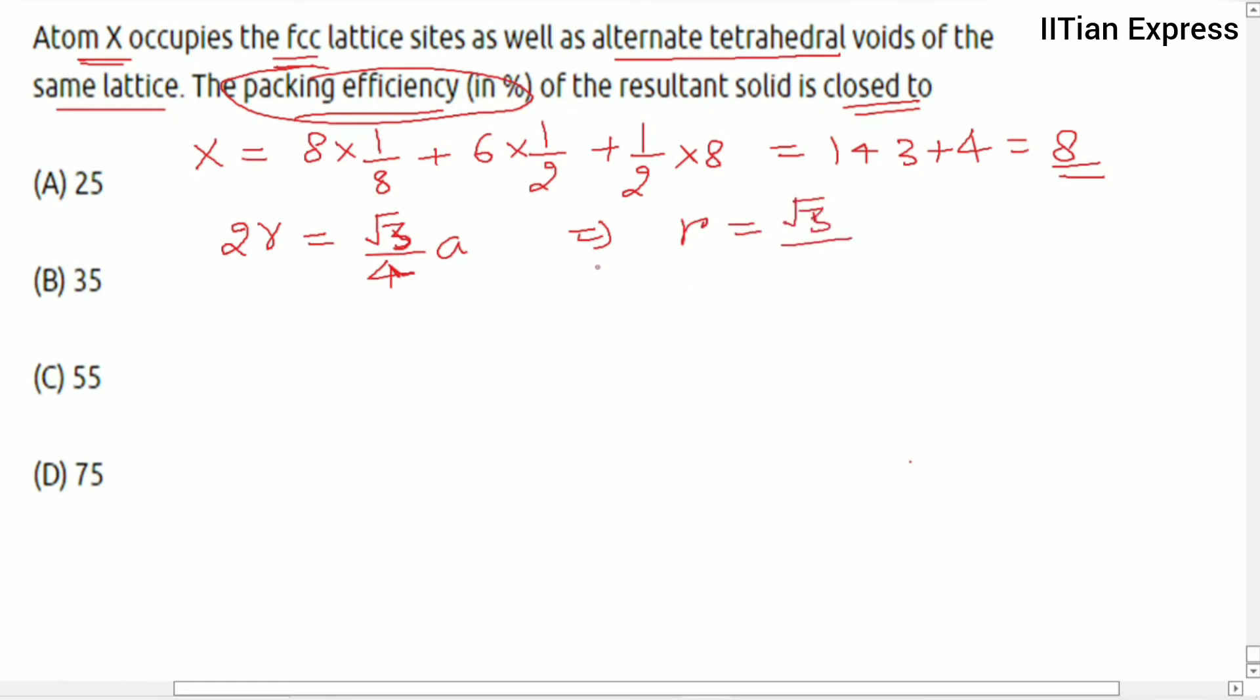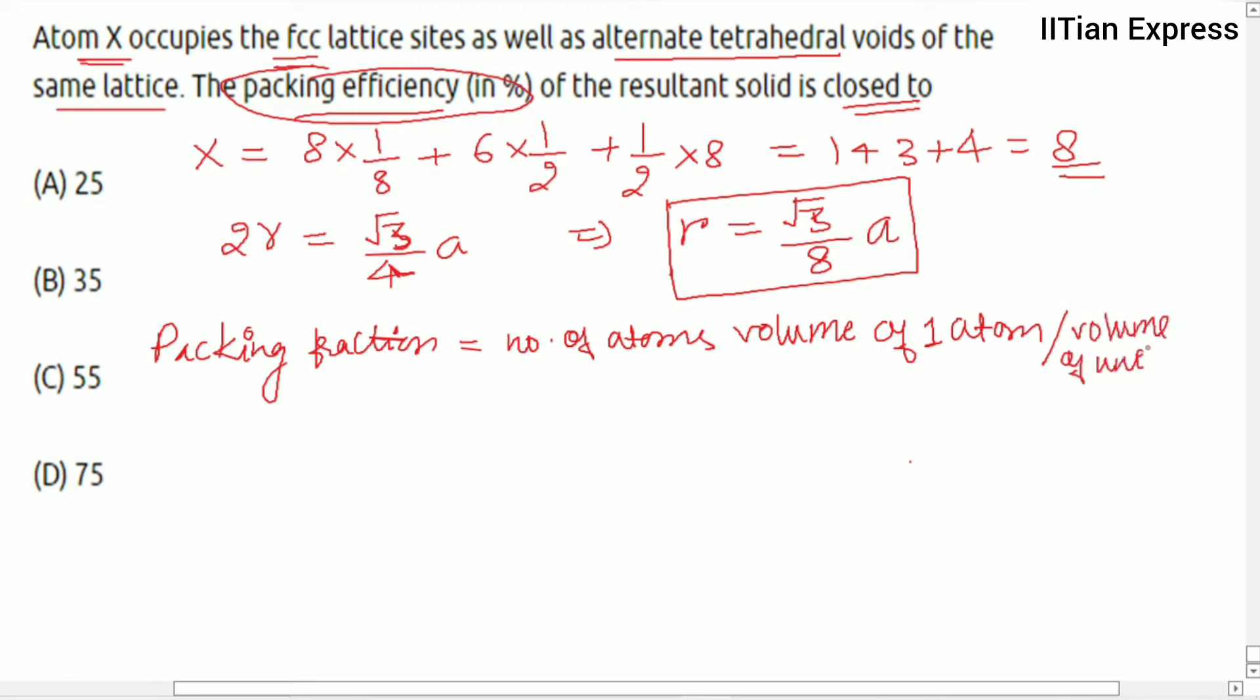Now we know that packing fraction is equals to number of atoms multiplied by volume of 1 atom, divided by volume of unit cell, and that is multiplied by 100 percent.